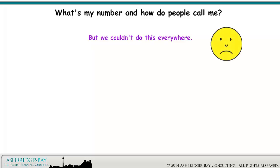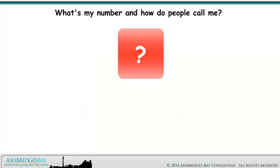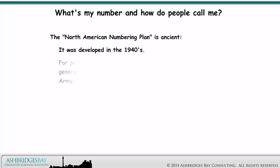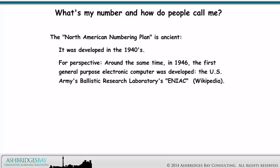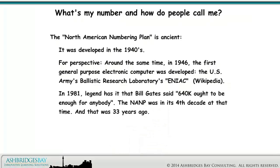Unfortunately, some users' numbers are different if called from an outside phone or if called internally. The North American Numbering Plan is ancient — it was developed in the 1940s. For perspective, around the same time in 1946, the first general purpose electronic computer was developed: the U.S. Army's Ballistic Research Laboratory's ENIAC. In 1981, legend has it that Bill Gates said '640k ought to be enough for anybody.' The NANP was in its fourth decade at that time, and that was 33 years ago. We can only do so much with such old technology.